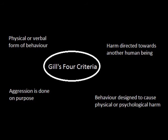Gilles' criteria for aggression states that for any aggression to be valid, the form of behaviour needs to be physical or verbal. Injury or harm needs to be directed towards another living being.